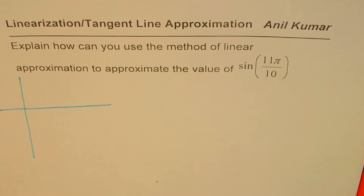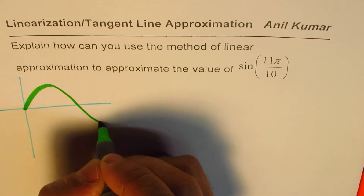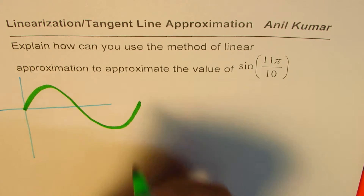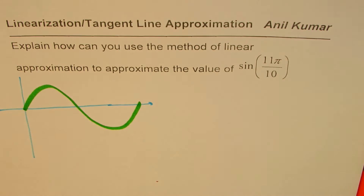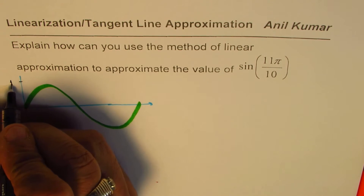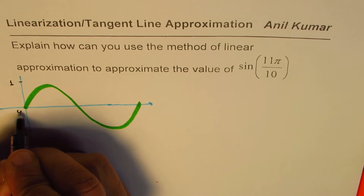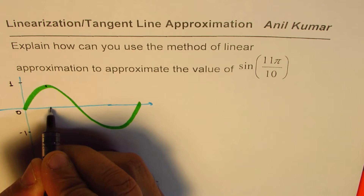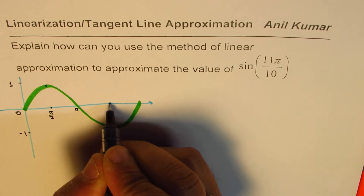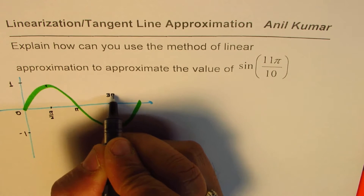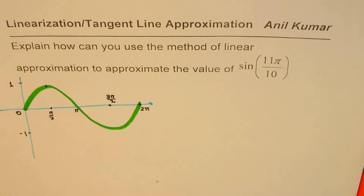The sine graph looks like this — the maximum and minimum values are +1 and -1. At 0 it is 0, at π/2 it is maximum at 1, at π it is again 0, at 3π/2 it is -1, and at 2π it is 0. That's the sine graph.